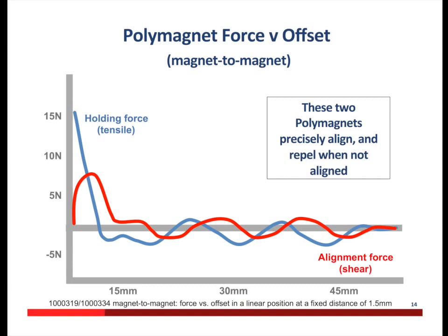These magnets will lightly repel anywhere along their length when not aligned, and they'll precisely align and attract with substantial strength when centered on each other. It's remarkable, especially when you compare it to conventional magnets — you can't change the shape of a force curve on a conventional magnet, let alone define how it behaves when misaligned. There's another pair of polymagnets in the polymagnet catalog that have the same physical size and shape, but they behave differently when misaligned — they lightly attach instead of lightly repel when misaligned, but still attach with full strength when centered. As you're building your tablet with a cover or a keyboard, these polymagnets are amazing tools for making sure your customer has a great experience. You as a product designer can choose which polymagnets to use to tune the overall experience for your customers.